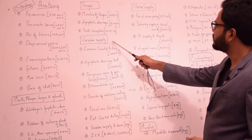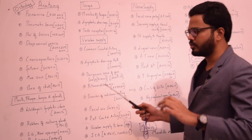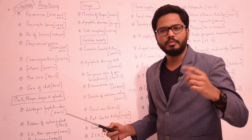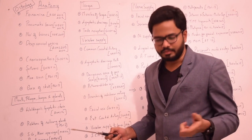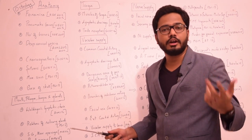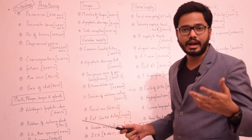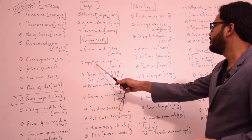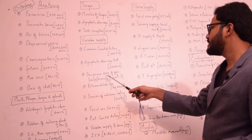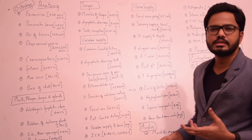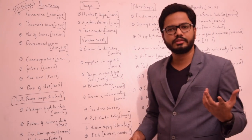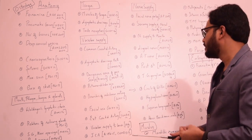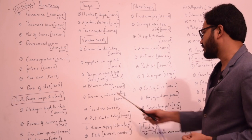Coming to vascular supply of head and neck, we have most common questions from common carotid artery, internal carotid artery, external carotid artery and their branches, their relations, lymphatic drainage of teeth, dangerous area of face, and dangerous area of scalp. We can expect several questions from these stock topics.